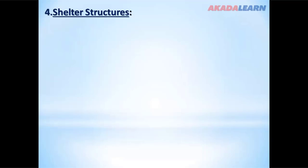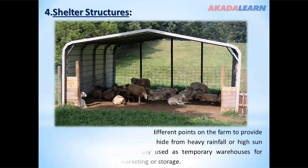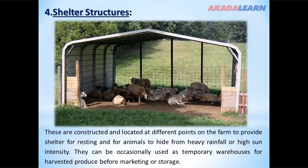The next farm structure is shelter structures. These are constructed and located at different points on the farm to provide shelter for resting and for animals to hide from heavy rainfall or high sun intensity. They can occasionally be used as temporary warehouses for harvested produce before marketing or storage.